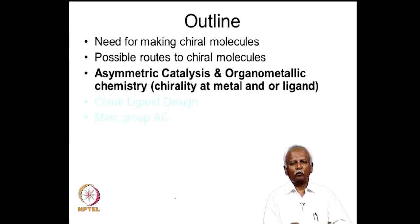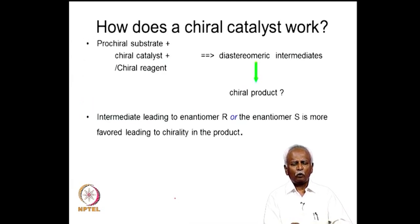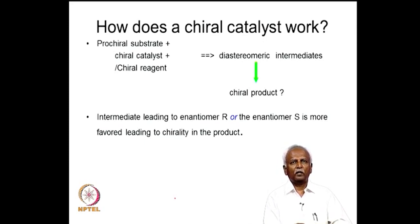Let us now proceed to the main topic: the organic synthesis of chiral molecules using organometallic chemistry. You can make an organometallic catalyst which is chiral at the metal or at the ligand and so induce chirality in the reaction you want to carry out. A chiral catalyst works because if you have chirality in one of the molecules used in the course of the reaction, it can indirectly induce chirality — provided there is a prochiral center. One must therefore have a prochiral substrate and either a chiral catalyst or a chiral reagent.